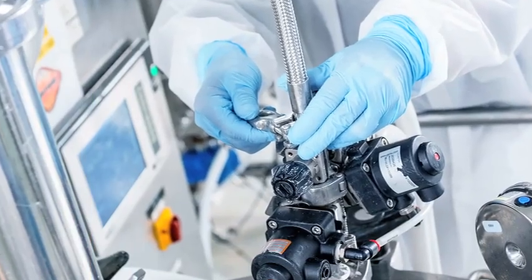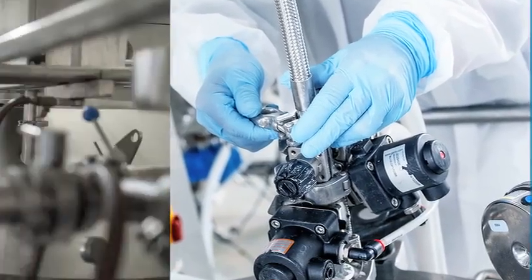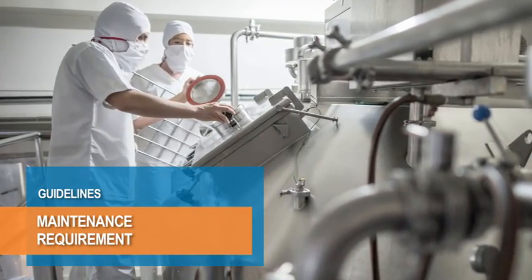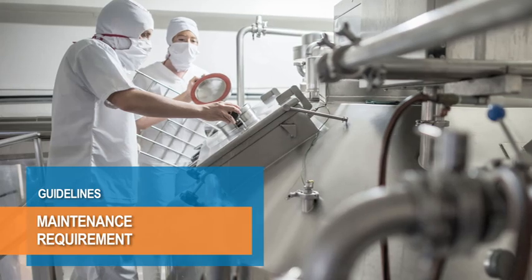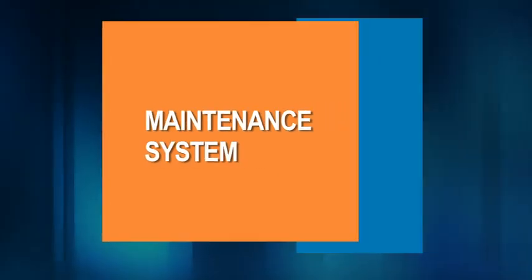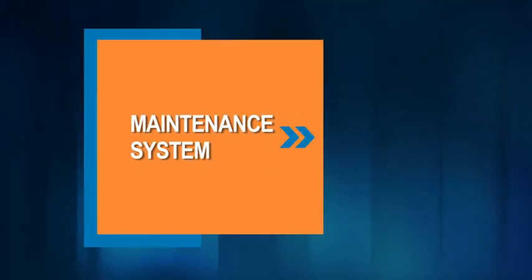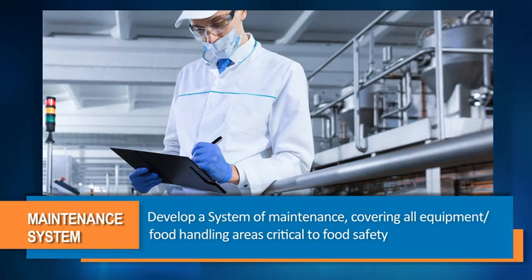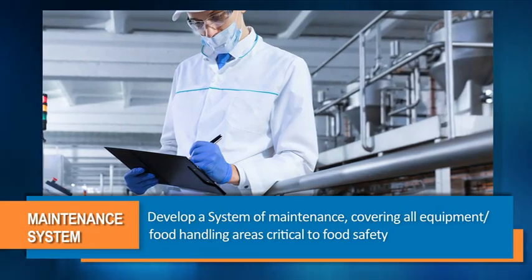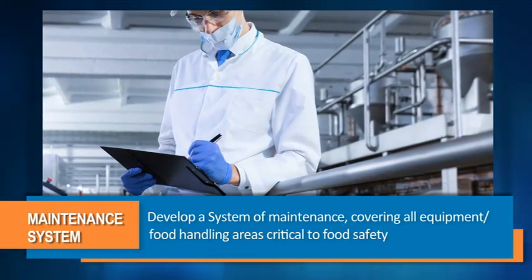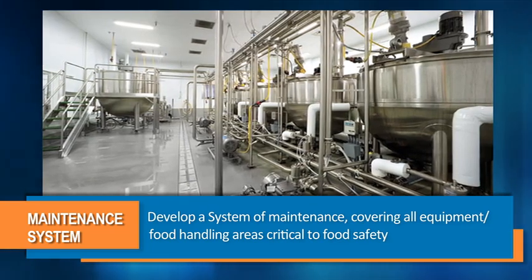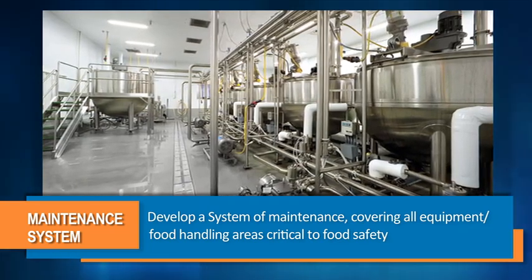In this video, we will learn about the maintenance requirements to ensure a hygienic environment for the production of food products. The food business operator shall develop a system of maintenance covering all the equipment and food handling areas that are critical to food safety.